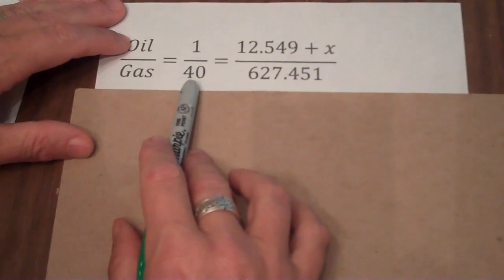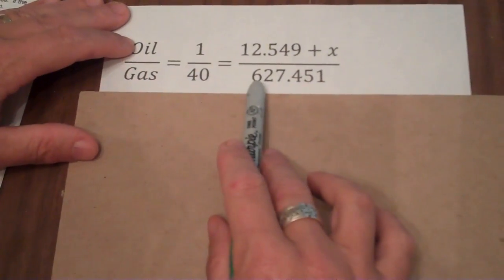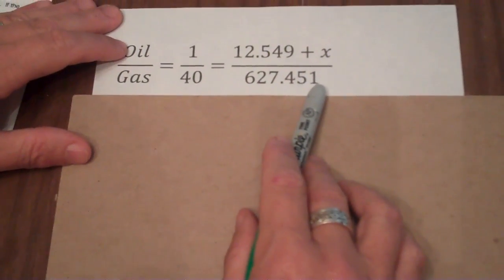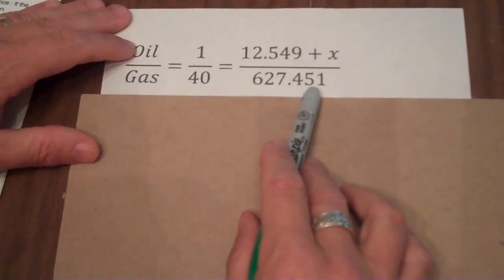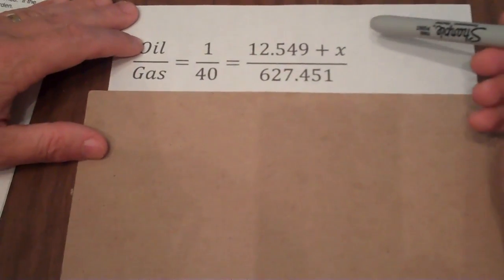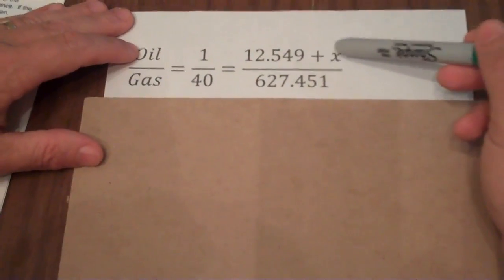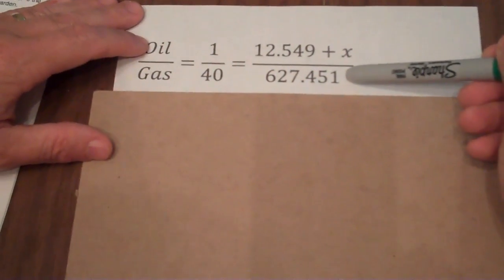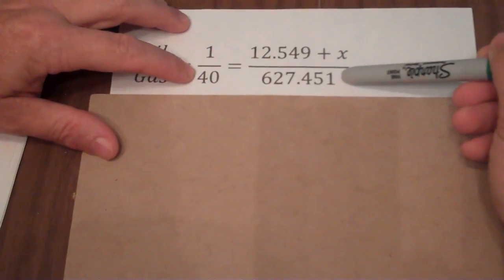But that will give me 12.549 plus those x fluid ounces of oil that I'm going to add. On the bottom I have the gasoline, which I know I want to be 40. And I have 627.451 fluid ounces of gasoline already in the container. I'm not adding any gasoline, so that number will stay the same. And what I want is that ratio of those 12 original fluid ounces plus the extra amount I add over my 600 and some fluid ounces of gas. I want that to be in a ratio of 1 to 40.